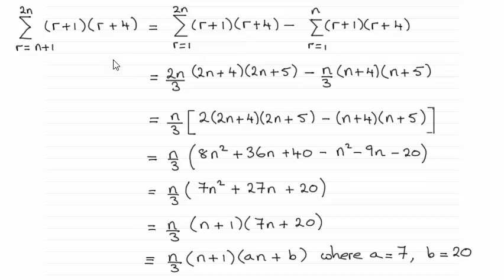In the previous part we found the sum from r=1 to n of (r+1)(r+4). So we can pick up on that result, only this time, because it starts at r=n+1, we go right back to the beginning with r=1 and sum all the way up to 2n, then subtract from it all the terms from r=1 to n, and that will leave us with the summation going from r=n+1 up to 2n.